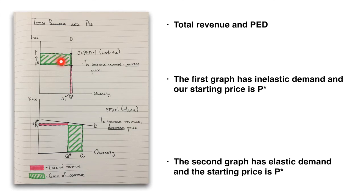In both instances, we're better off in the second scenario than we are with P star. And you'll see that for inelastic demand, increasing price increases total revenue. And for elastic demand, decreasing price increases total revenue.